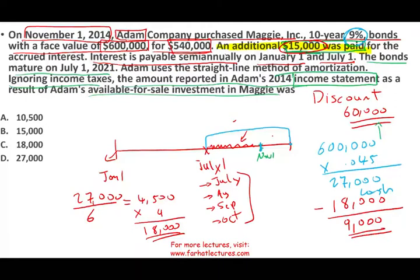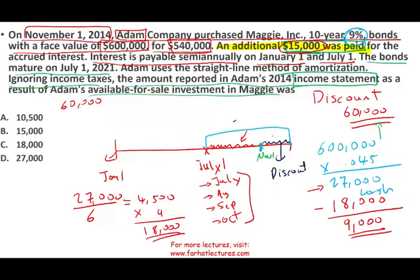We don't have $9,000 as an answer — we are missing one more thing. We are missing the fact that the bond has $60,000 of discount. When you buy the bond at a discount, your interest revenue will be higher than the cash that you received. Although you received $27,000 in cash, the interest revenue would be higher because you received a discount. Adam will need to amortize this discount for November and December using the straight-line method, which means amortizing it equally over the life of the bond.